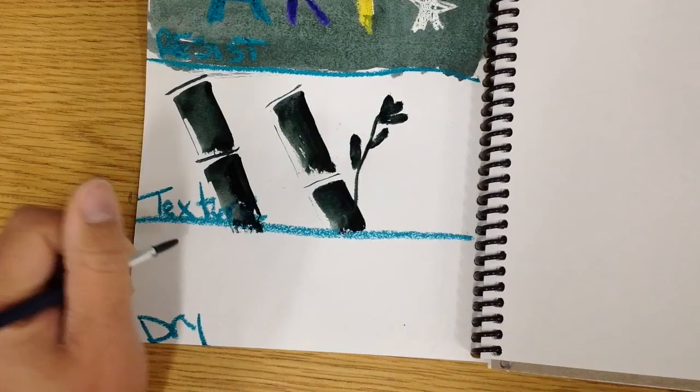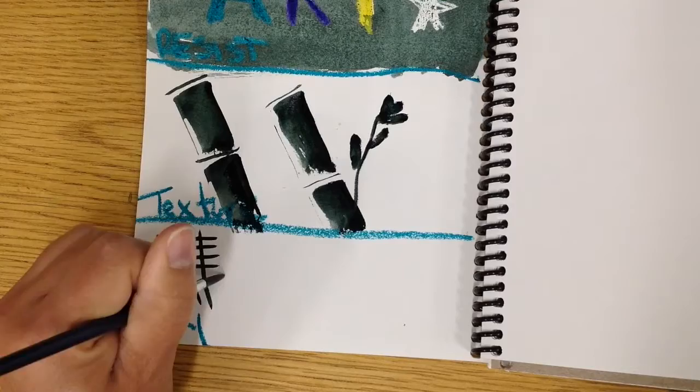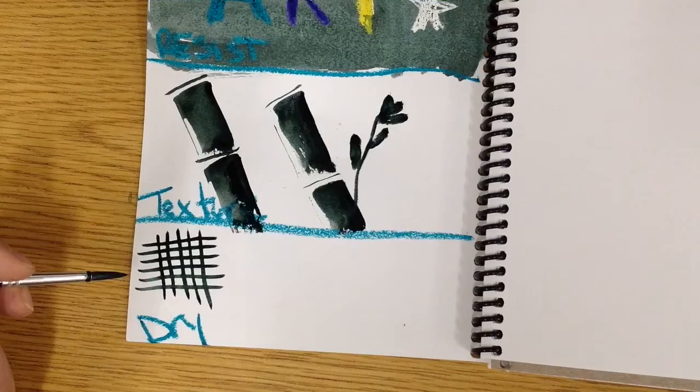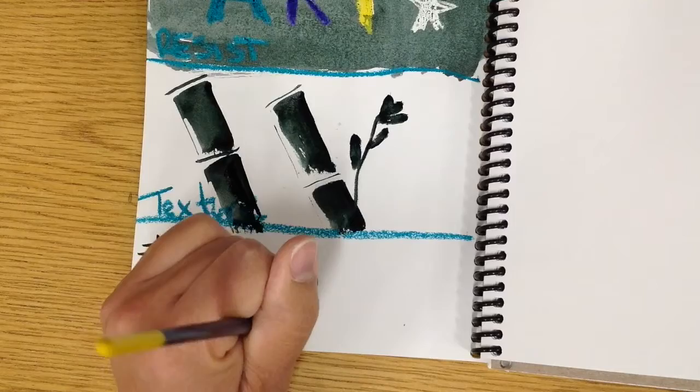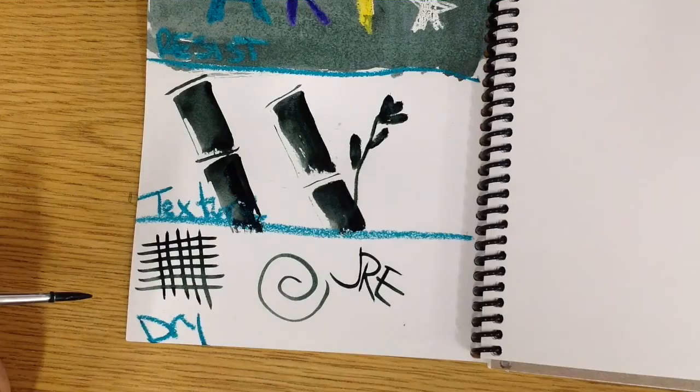I'm going to create some cross hatching here. What you're showing and what you're practicing is that you can control your pigment and your brush strokes very precisely. Some nice thin lines. Maybe try a spiral. Maybe try writing your initials. Just some easy practice things that you can do to work on your watercolor skills.